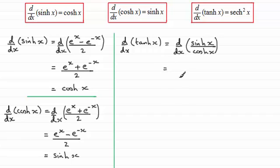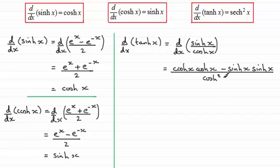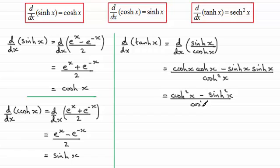Using the quotient rule, the denominator cosh(x) is multiplied by the differential of the numerator. The differential of sinh(x) we've seen is cosh(x), so we get cosh(x) times cosh(x). Then using the quotient rule it's minus: we take the numerator sinh(x) and multiply it by the differential of the denominator. The differential of cosh(x) is sinh(x). We then divide this result by the denominator squared, which is cosh squared x.